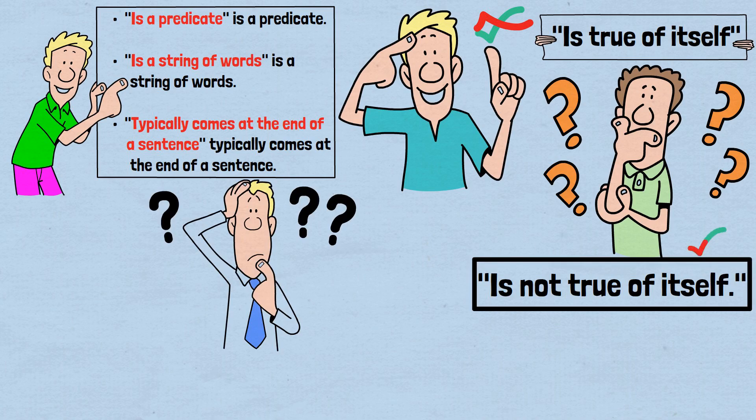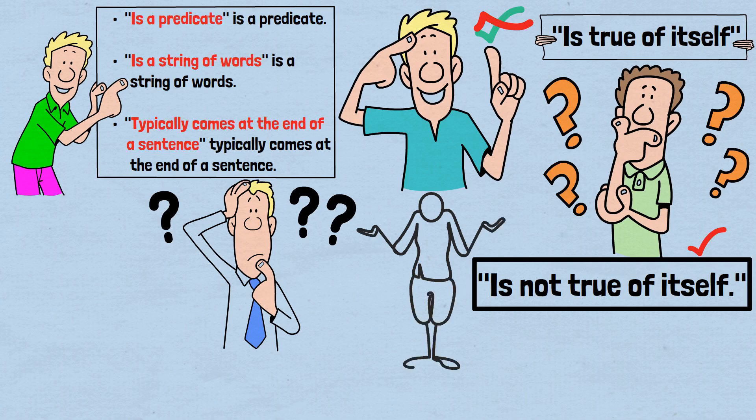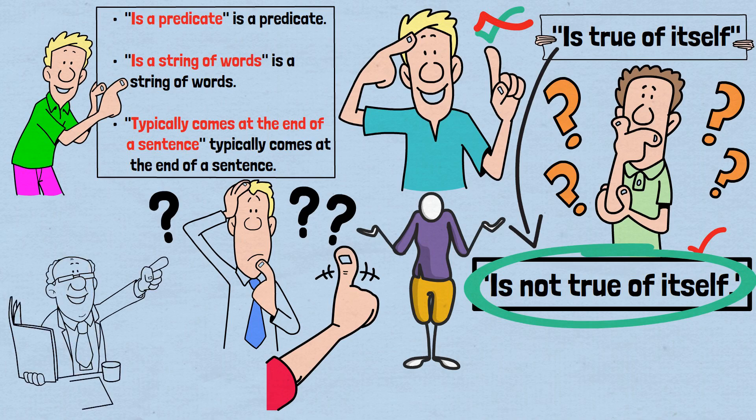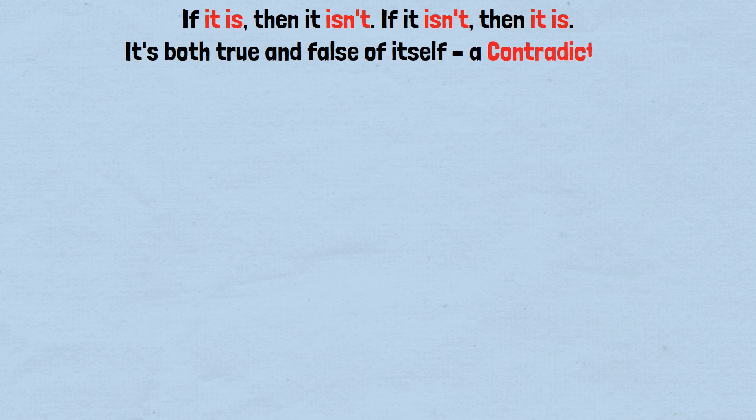If it is true of itself, then what does it say about itself? It says that it's not true of itself. So if it is true of itself, then it's not true of itself. If it's not true of itself, then it meets its own criterion, which means it is true of itself. If it is, then it isn't. If it isn't, then it is. It's both true and false of itself. A contradiction.